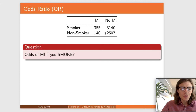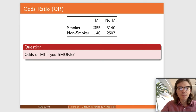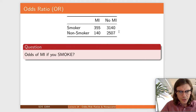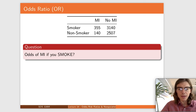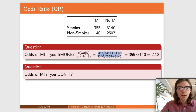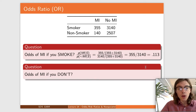So take a minute and think about it. What are the odds of a myocardial infarction if you're a smoker? Well, what's the probability of a myocardial infarction if you're a smoker? There are 355 smokers with a myocardial infarction, out of all the smokers: 355 out of 355 plus 3140, so 3495. That's the probability. So it's just 355 over 3495 divided by 1 minus that. And that ends up simplifying, because these two denominators are the same, to 355 over 3140. The odds of a myocardial infarction if you're a smoker are 0.113.